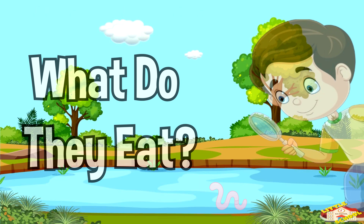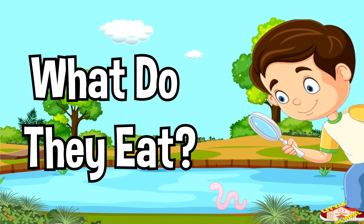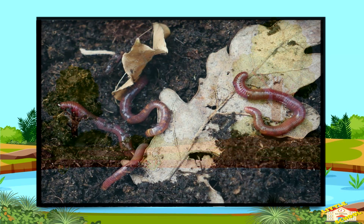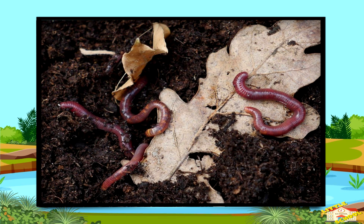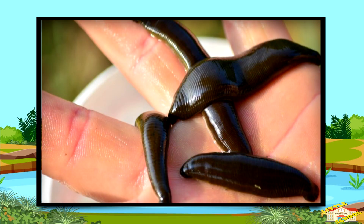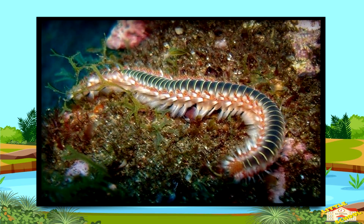Annelids have a closed circulatory system — just like us, they have blood vessels inside. What do annelids or segmented worms eat? Earthworms eat dead plants, leaves, and dirt. Not all, but some leeches drink blood. Marine worms eat tiny animals, algae, or filter food from water.